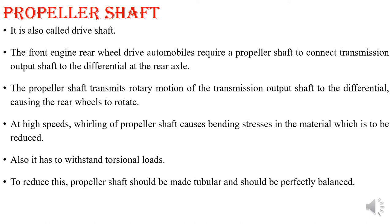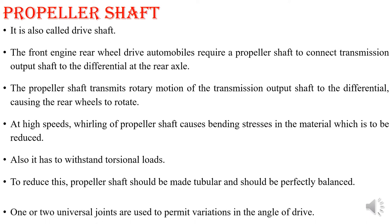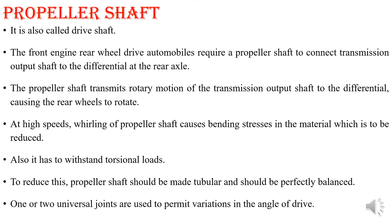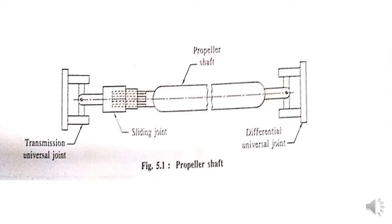To avoid that, we will provide some kind of joints, or sometimes the propeller shaft will be made tubular in shape so that it can transfer the power very easily. One or two universal joints can be permitted so that they can allow variation in the angle of drive. This figure will show the shaft arrangement.